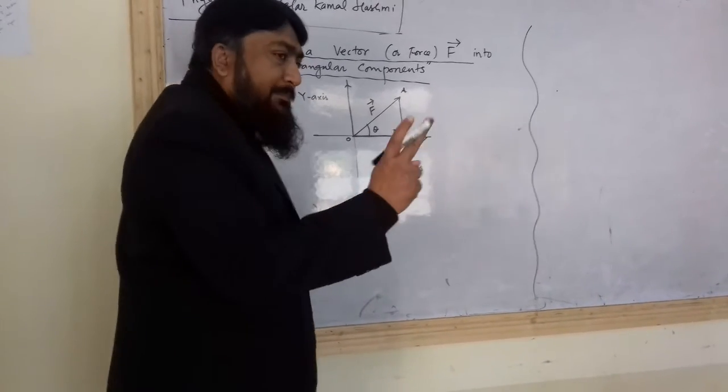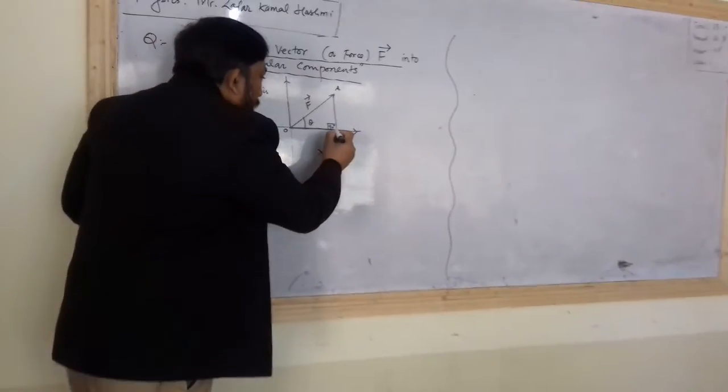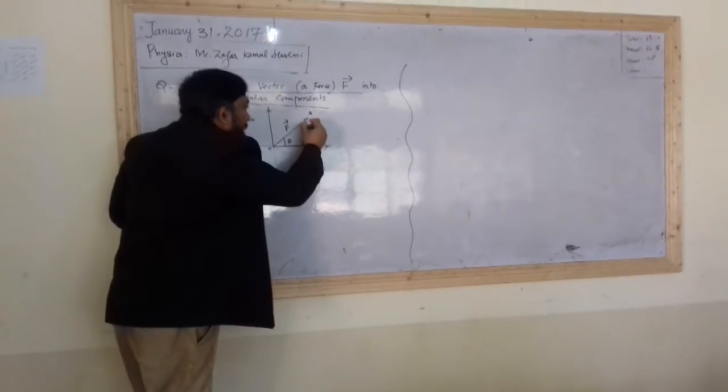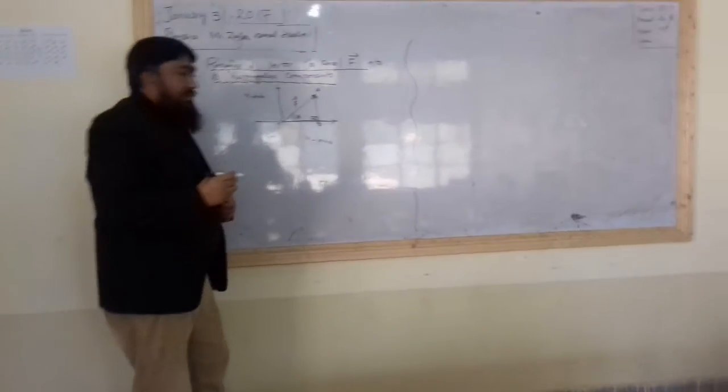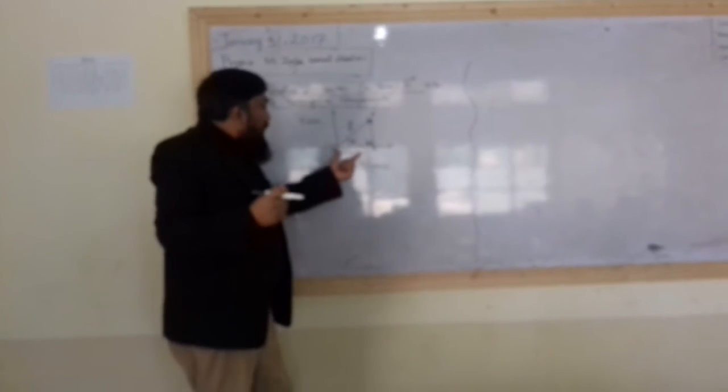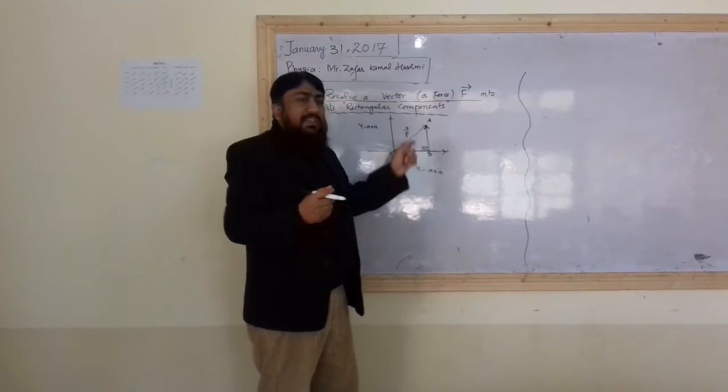And you see now, triangle OBA is formed where the angle B is of 90 degree. Angle OBA or angle B. So first step, I draw a perpendicular AB on X axis. Second step, I put two arrows. How many arrows? Two. One arrow is here and the second arrow is here. Putting these two arrows means OB is a vector and BA is a vector.